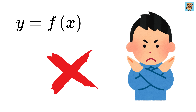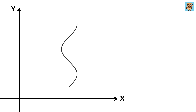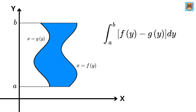It is not necessary that we will be given y in terms of x. We can also be given a function as x in terms of y. So suppose we are given x equals f of y and x equals g of y. Then the area between them from a to b is the integral from a to b of f of y minus g of y times dy — in other words, the integral of the right function minus the left function.